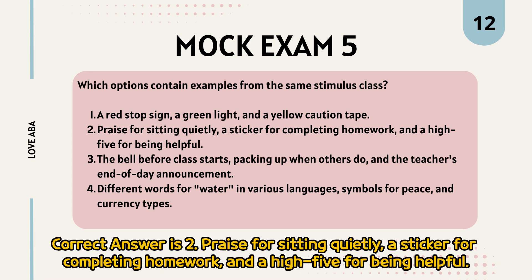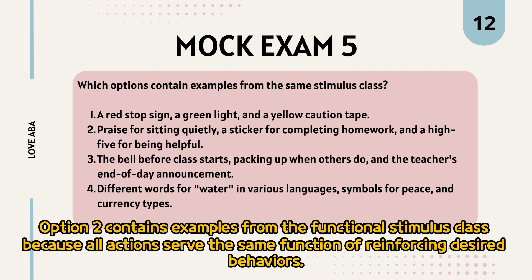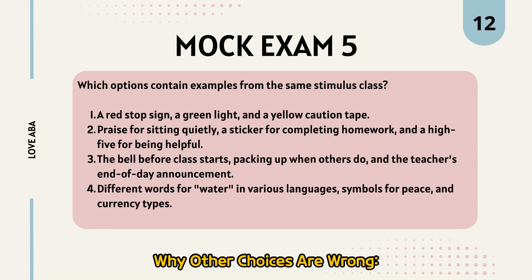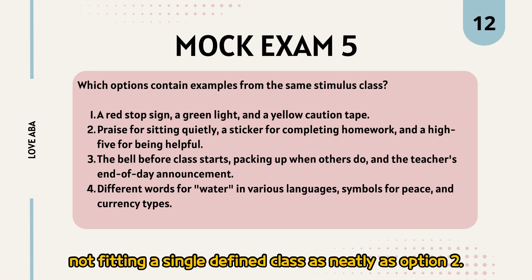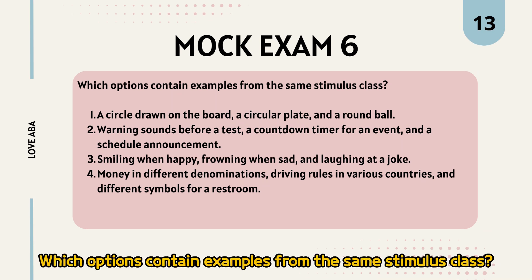The correct answer is 2 — praise for sitting quietly, a sticker for completing homework, and a high-five for being helpful. Option 2 contains examples from the functional stimulus class because all actions serve the same function of reinforcing desired behaviors. Options 1, 3, and 4 mix examples from different stimulus classes — formal, temporal, and arbitrary respectively — and do not fit a single defined class as neatly as option 2.